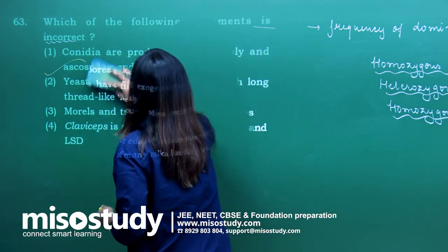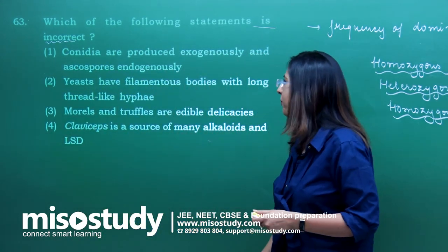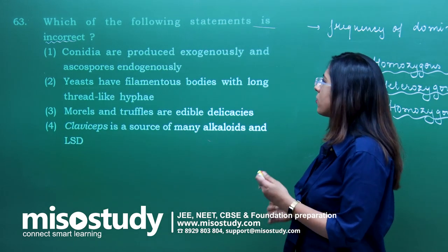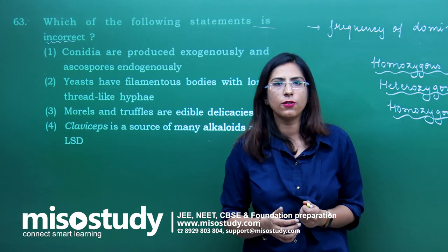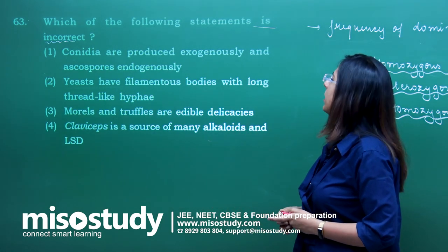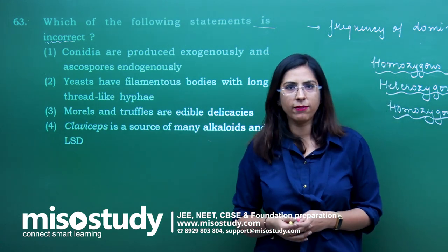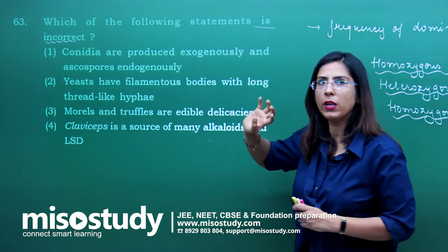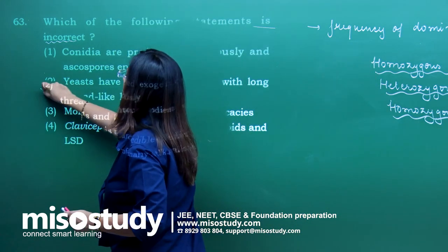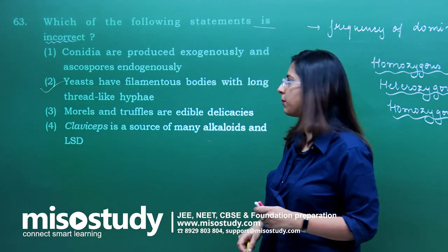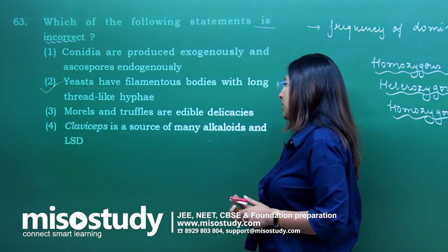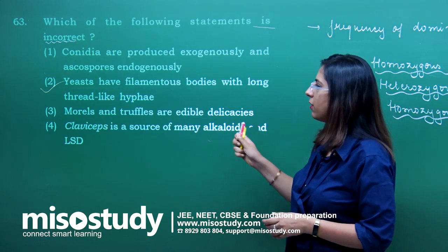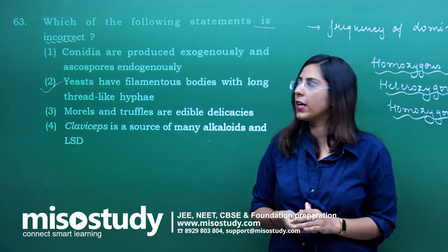Question number 63 — which of the following statements is incorrect? The conidia are produced exogenously and ascospores endogenously — absolutely right. Yeast are filamentous bodies with long thread-like hyphae — no, they do not have hyphae. So this option is incorrect and we are looking for an incorrect statement, so the answer is option B. Morals and truffles are edible delicacies, and Claviceps is the source of many alkaloids and LSD — both options 3 and 4 are correct.